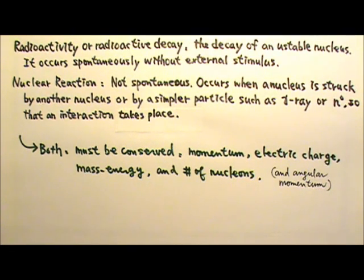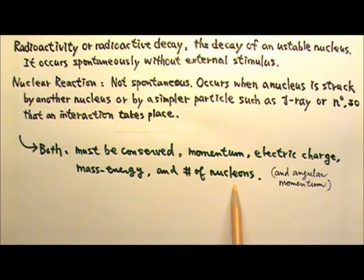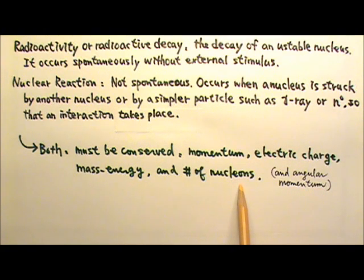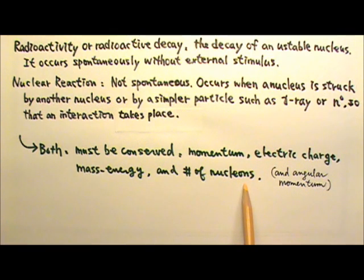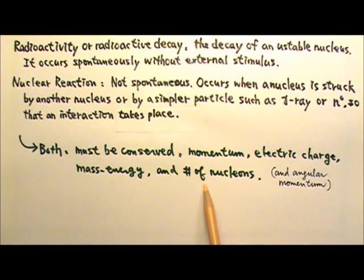There is also a new law of conservation. It is the conservation of nucleon numbers. According to this law, the total number of nucleons should stay constant. This means in those processes, protons can change into neutrons, or vice versa. But the total number of protons plus neutrons should remain constant.